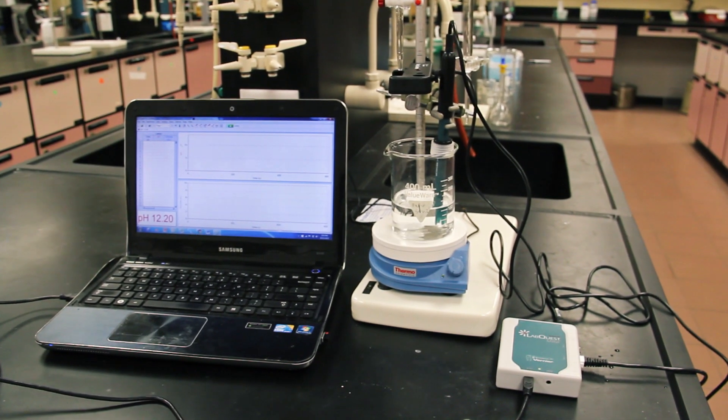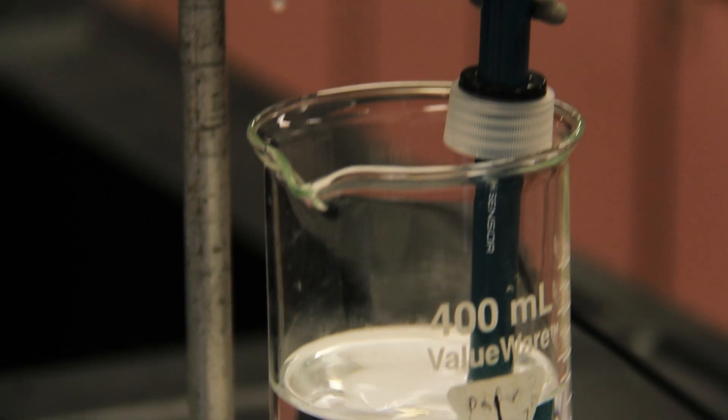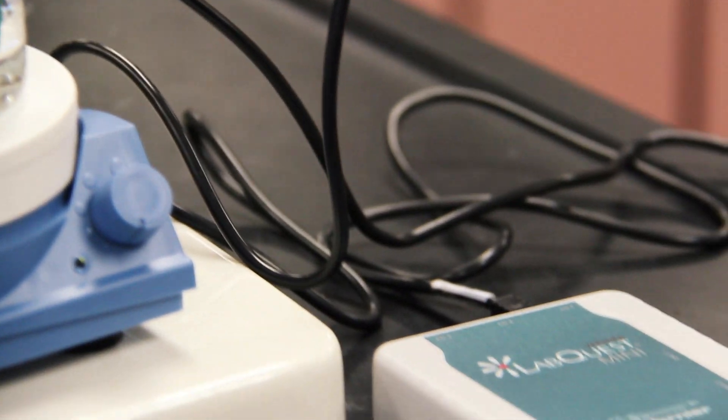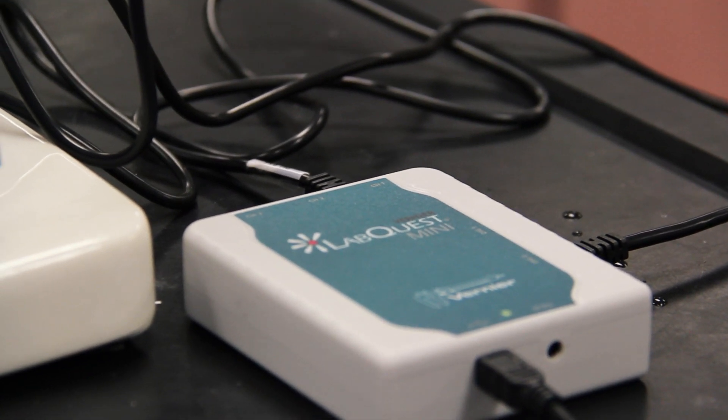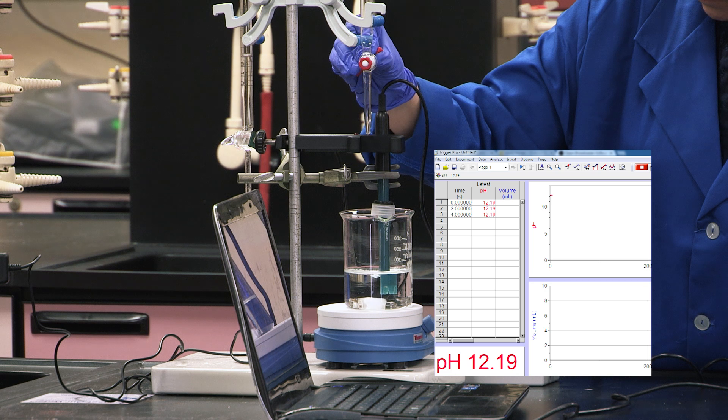Using acid-base indicators to inform you of the endpoint of titration is convenient, but is not the most precise method to detect an endpoint. Using a pH meter has the advantages of portability and convenience, and it's an incredibly precise way to detect the exact point when all the base has reacted with the titrant. The analyte has a high pH because it's a basic solution.